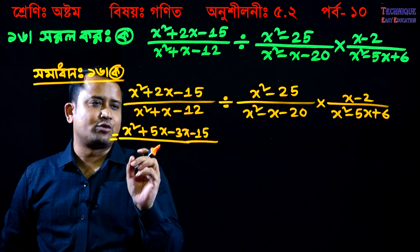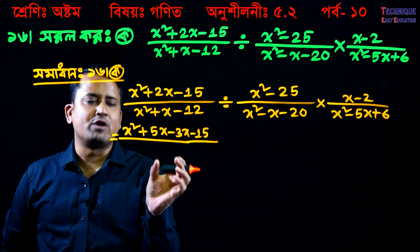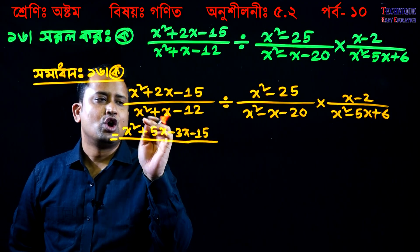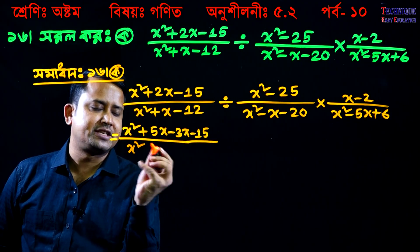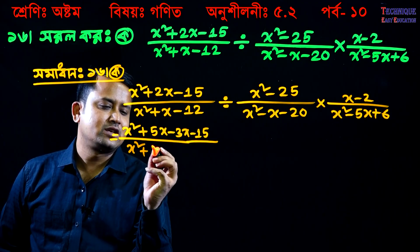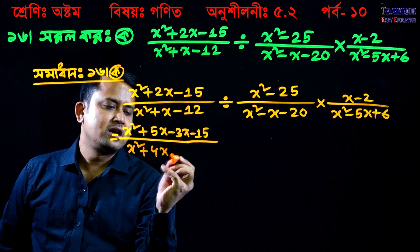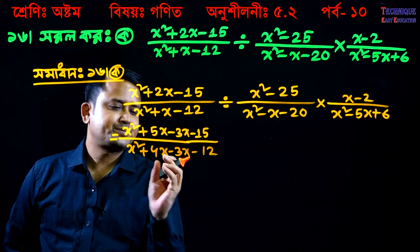We are going to have the middle term. Now let's do the middle term. We will see the whole other term. So, x squared minus 4x minus 3x minus 12.